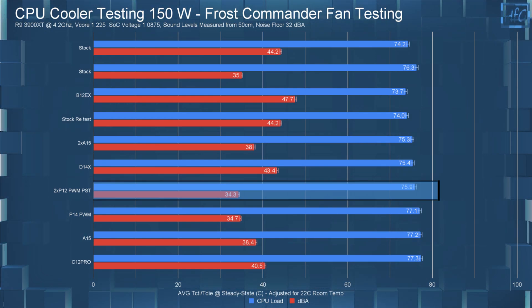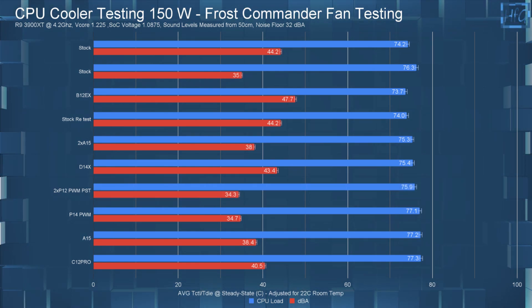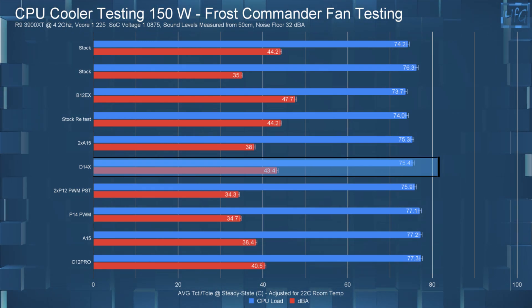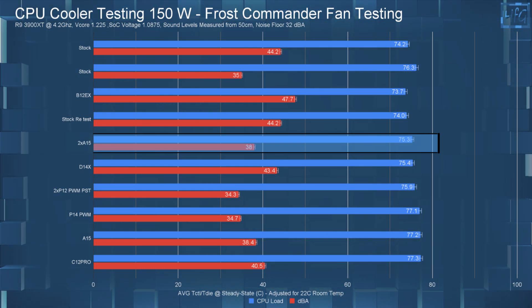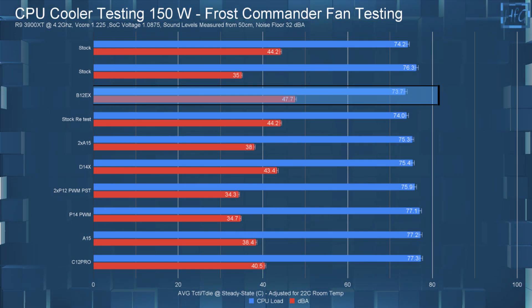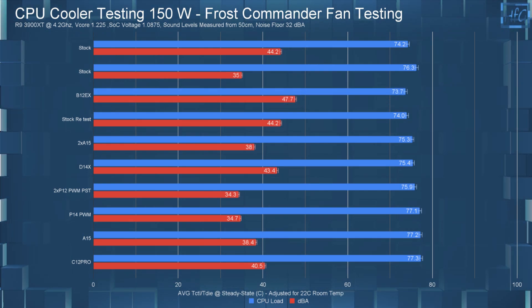When using two Arctic P12s, the average CPU temperature was at 75.9C with a DBA of 34.3. Then with just the D14X, the average CPU temperature was at 75.4C, but the DBA was at 43.4. The two A15s had the average CPU temperature at 75.3, with a DBA of 38. And finally, the beast that is the B12 Extreme had the average CPU temperature at 73.7C, but with a massive DBA of 47.7.